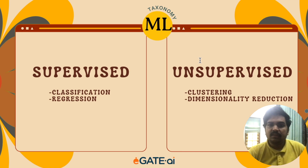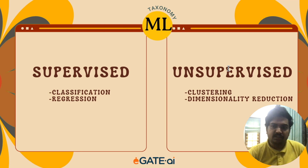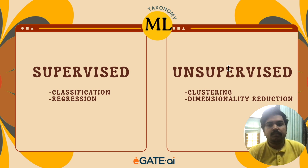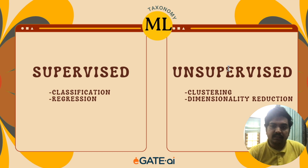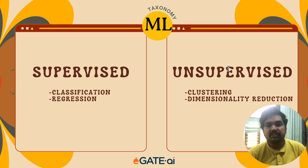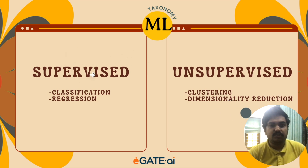Similarly, unsupervised learning forms another paradigm. Here, we essentially learn a structure or discover a pattern without the need for human intervention. In other words, unsupervised learning does not require labelled information, whereas supervised learning does. Unsupervised learning can be further categorised into clustering and dimensionality reduction.